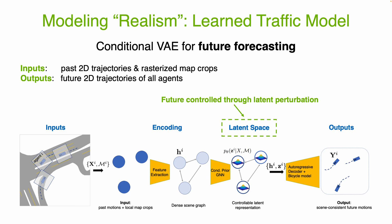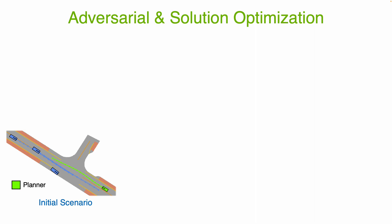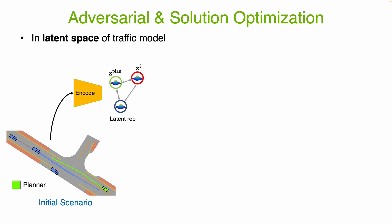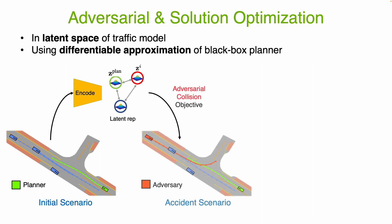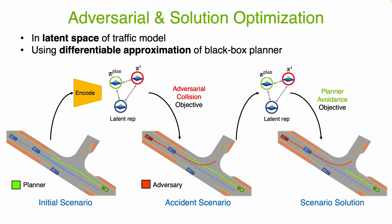In adversarial optimization, we leverage this property to search for a future that causes a collision. The scenario generation pipeline starts from a regular, real-world scenario. The given planner is first rolled out, and then the scenario is embedded in the traffic model latent space. Optimization is performed for all agents in the latent space to minimize the distance between the planner and other agents in the scene. Note that the planner is also approximated with the traffic model, which allows for typical gradient-based optimization to be used. After finding a collision scenario, the objective is changed, and a second latent optimization modifies the planner trajectory to avoid a collision if possible.